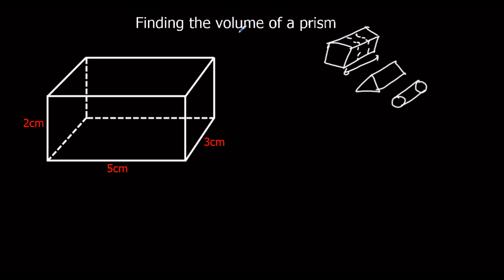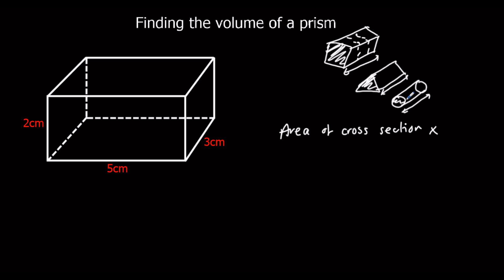So because of that, to find the volume of a prism, you have to find the area of the front — it's called a cross section. So the area of the cross section is the area of the front of the shape, multiplied by how far back it goes — the length of the shape. For any prism, the volume is the area of the cross section times the length.